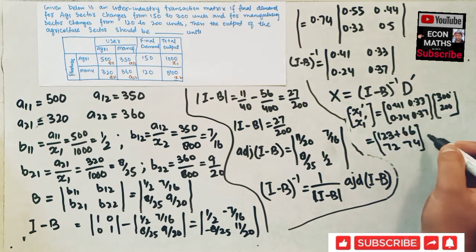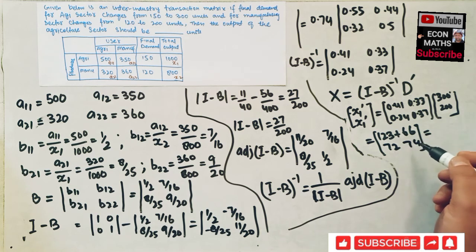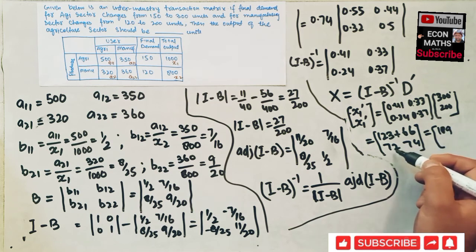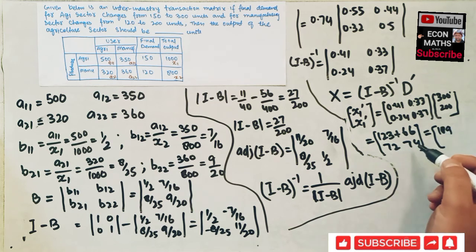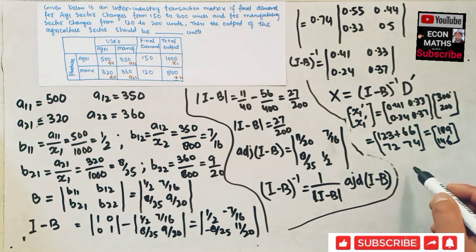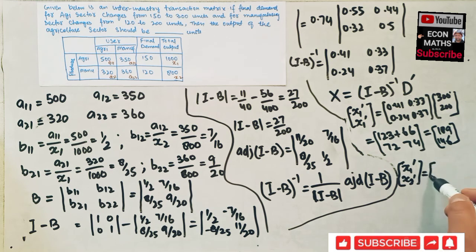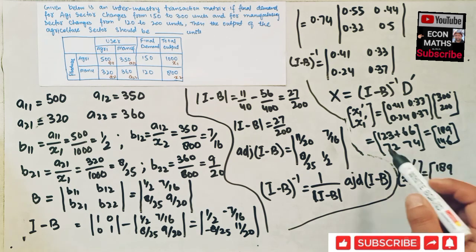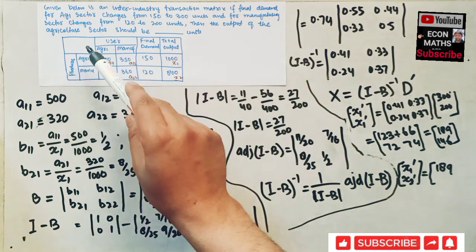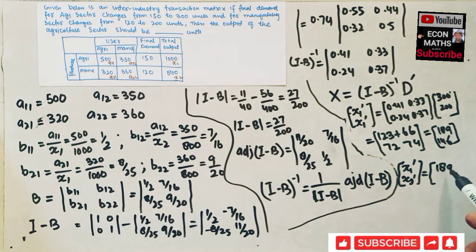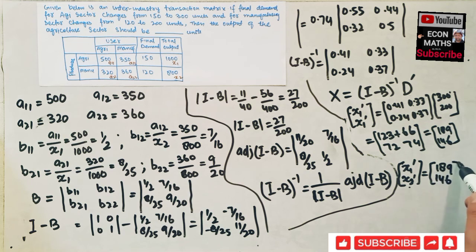So the output level of the agriculture sector should be 189 units, and for the manufacturing sector it would be 146 units.